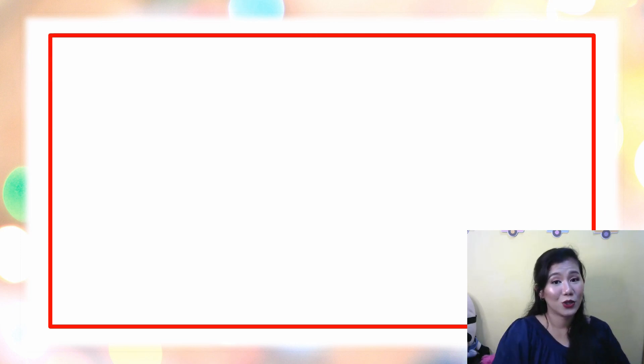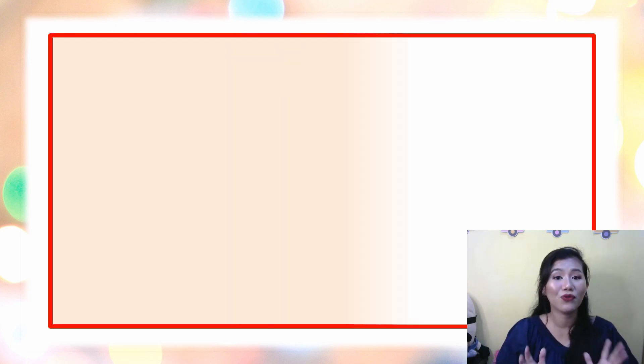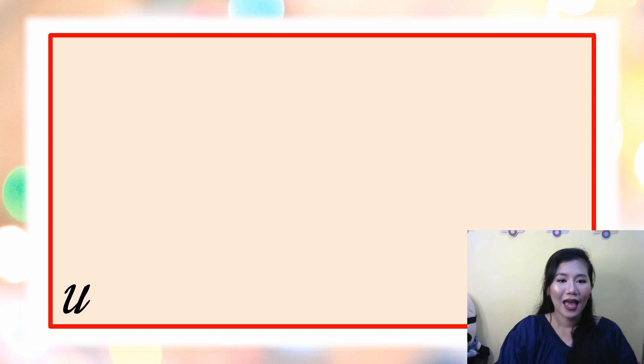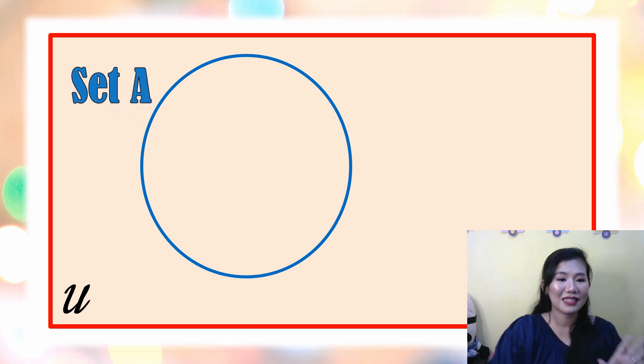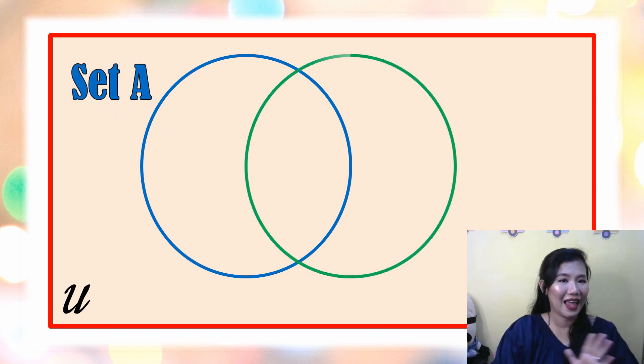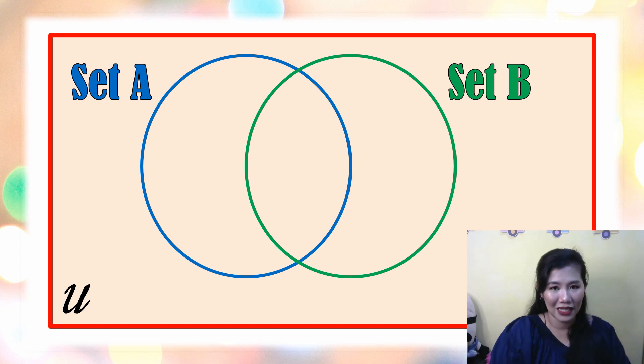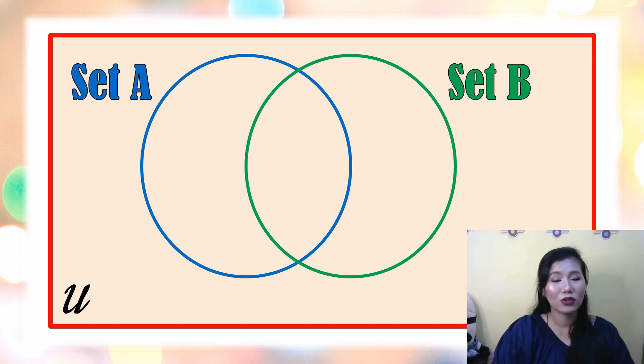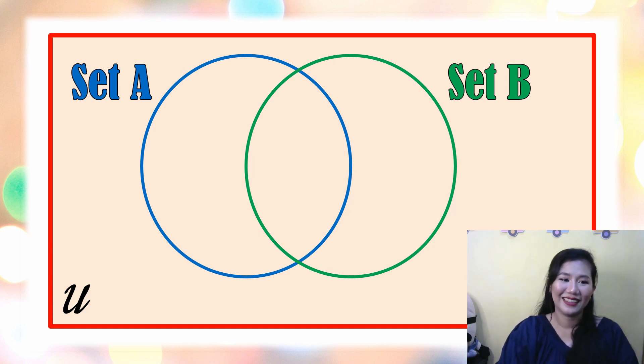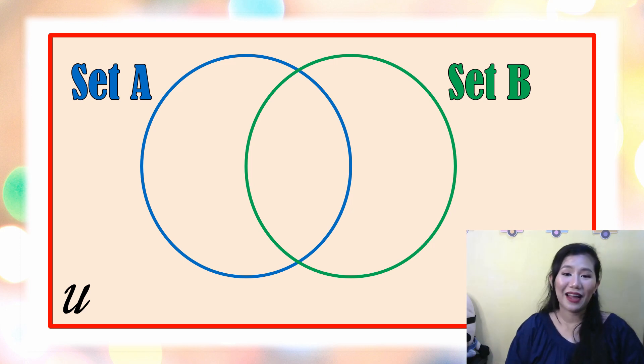Here I have a rectangle, and this rectangle represents your universal set. Anything that you see or find inside this rectangle is part of the universal set — like this blue circle, which is for Set A, and this green circle, which is for Set B. Anything found inside Set A and anything found inside the green circle are elements that are also part of the universal set.